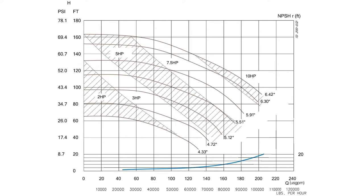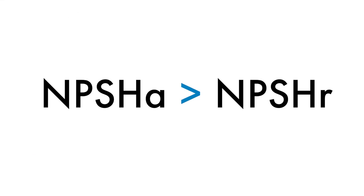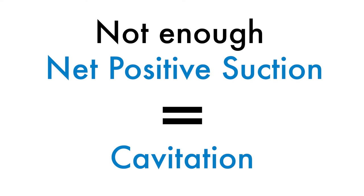The other side of the equation is NPSHA, with A standing for Available. NPSHA is determined by the process piping. You always want NPSHA to be greater than NPSHR. Without enough net positive suction, the pump will cavitate, which affects performance and pump life.